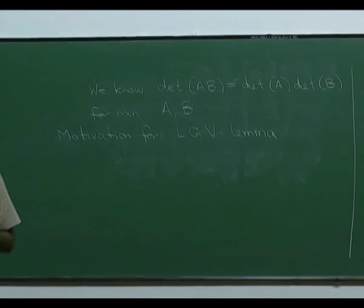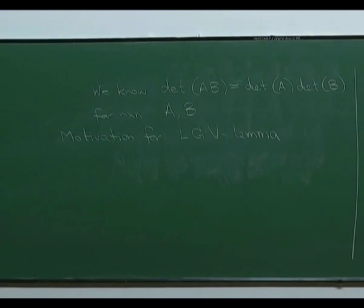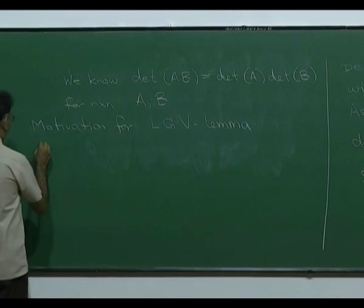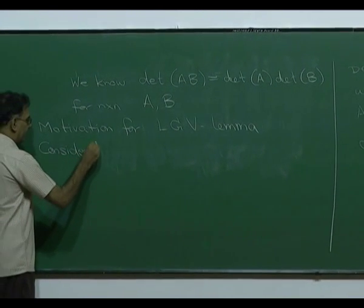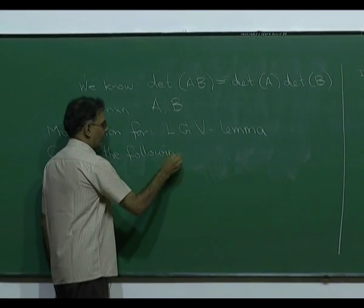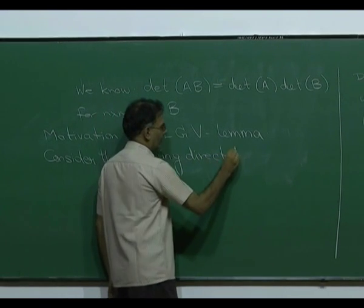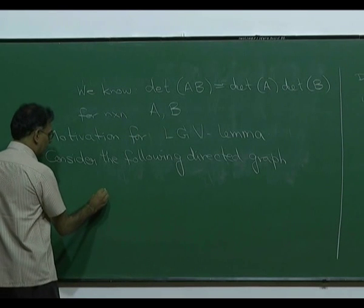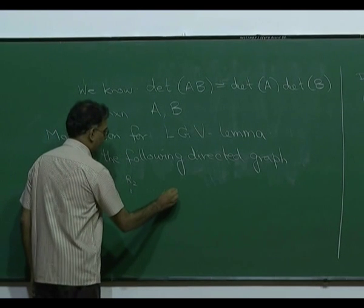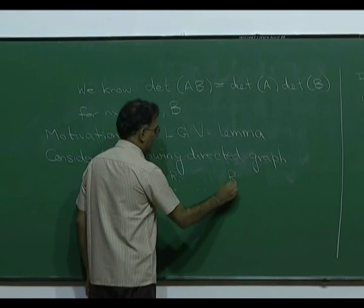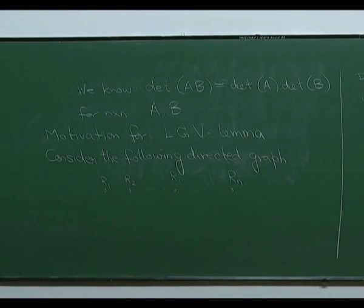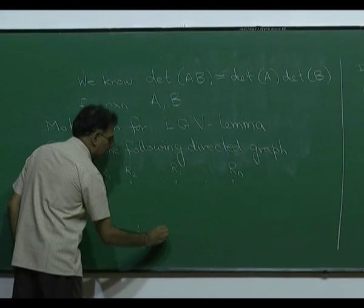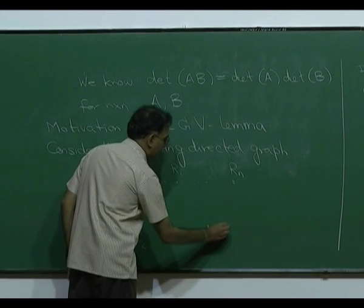To motivate this, let me consider a directed graph. This directed graph has 2N vertices and one edge between every pair of vertices. There are N vertices which I will write in two lines, calling them R₁ up to Rₙ, and another N vertices which I will call C₁ up to Cₙ. This graph has 2N vertices.